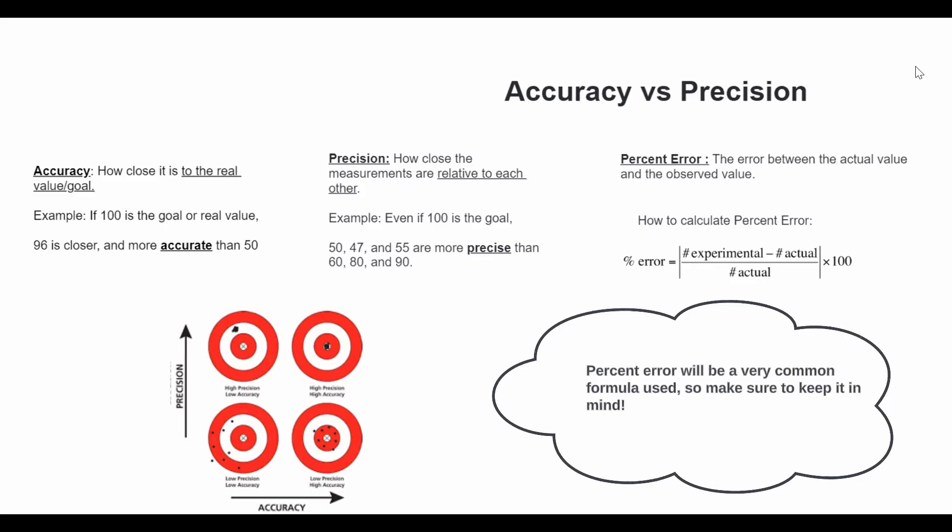On the other hand, we have precision. So precision is how close the measurements are relative to each other. So even if 100 is the goal, for example, 50, 47, and 55 will be more precise than 60, 80, and 90, since 50, 47, and 55 are closer to each other, even though they might be farther away from the actual goal.